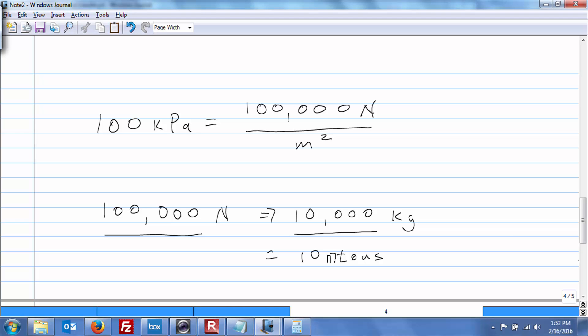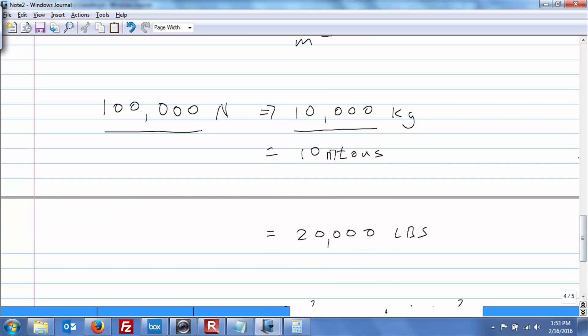And we're just kind of doing order of magnitude here. So 10 metric tons, that's about the same as 20,000 pounds, short tons. And you're like, gosh, that sounds like a lot more. 20,000 pounds sounds like a heck of a lot more than 15 pounds. How did it get so big all of a sudden?